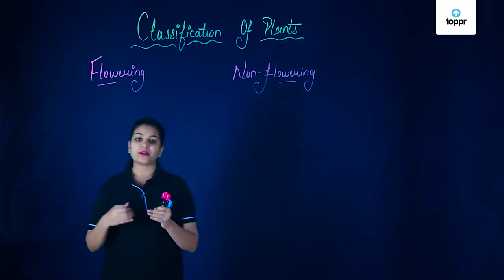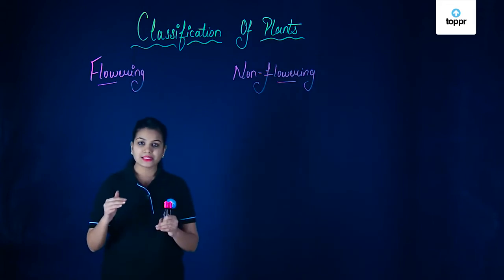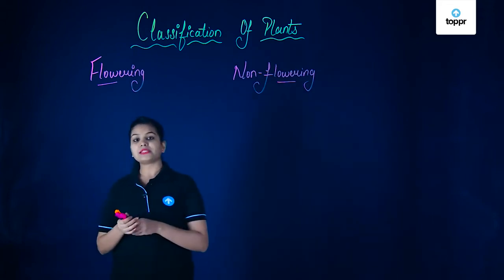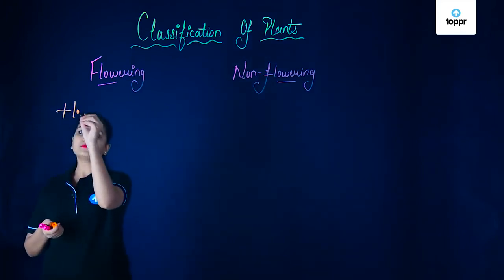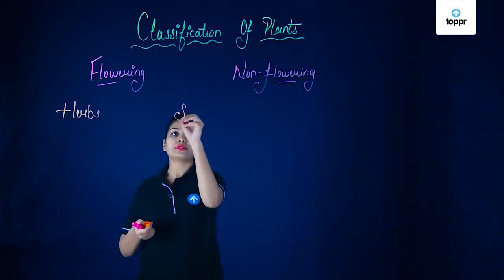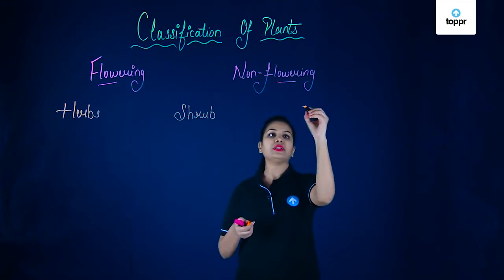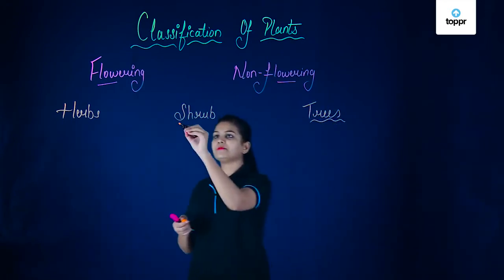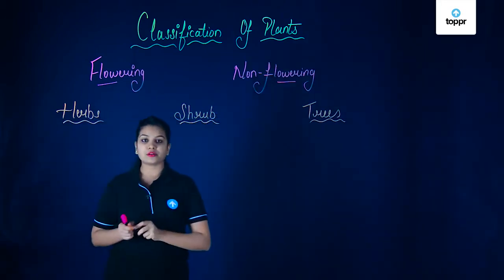The next way of classifying plants is on the basis of their size and the nature of their stem. We can divide plants into herbs, shrubs, and trees. Let's have a look and observe the difference between these three.